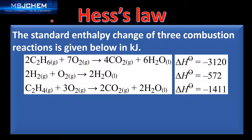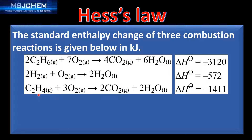Next we look at another kind of problem that can be solved using Hess's law, where the standard enthalpy change of three combustion reactions is given. First, the combustion of two moles of ethane gives an enthalpy change of negative 3,120 kilojoules. Then the combustion of two moles of hydrogen gas gives negative 572 kilojoules. Finally, the combustion of one mole of ethane gives negative 1,411 kilojoules.